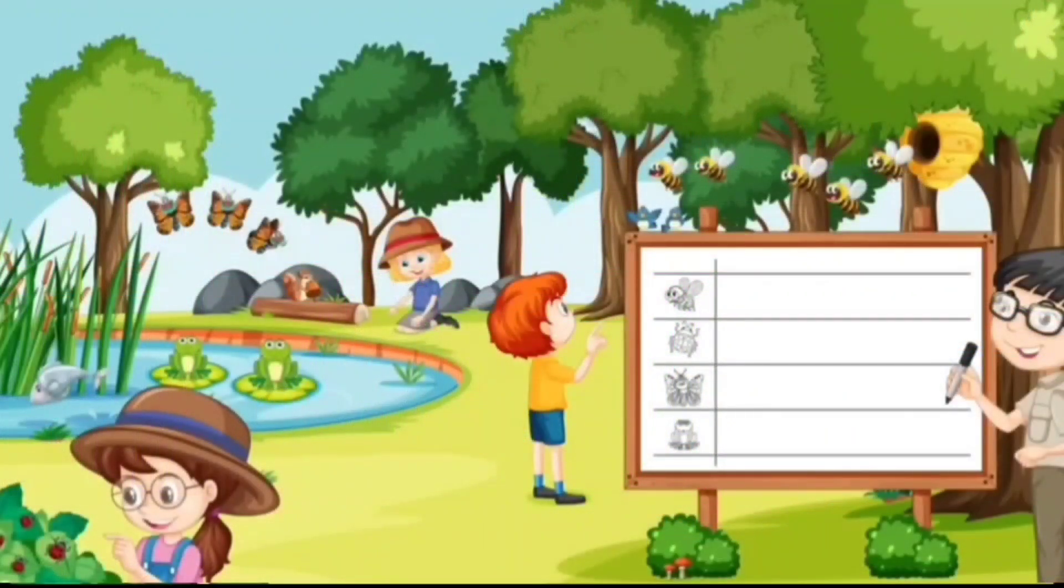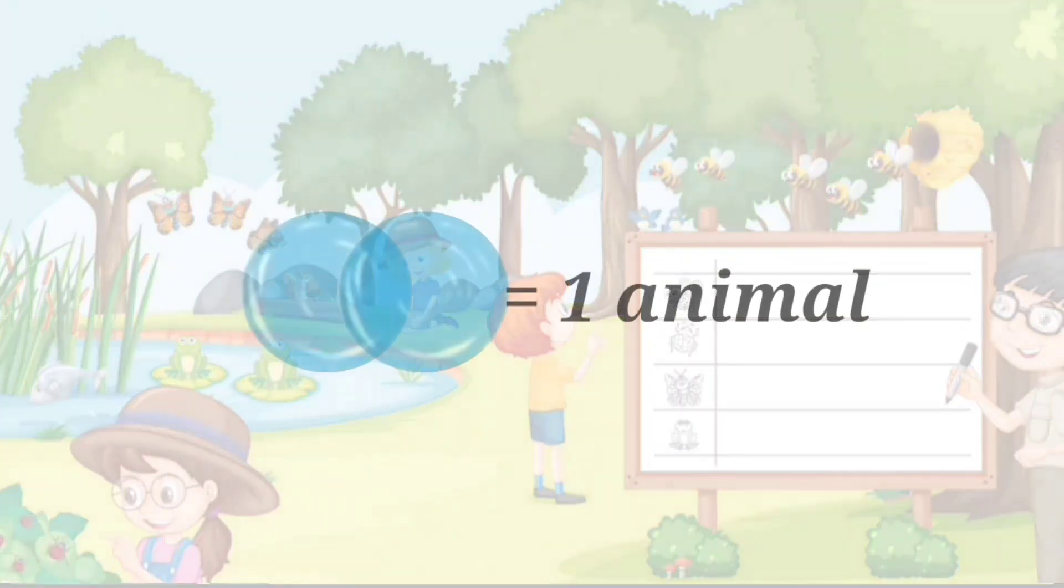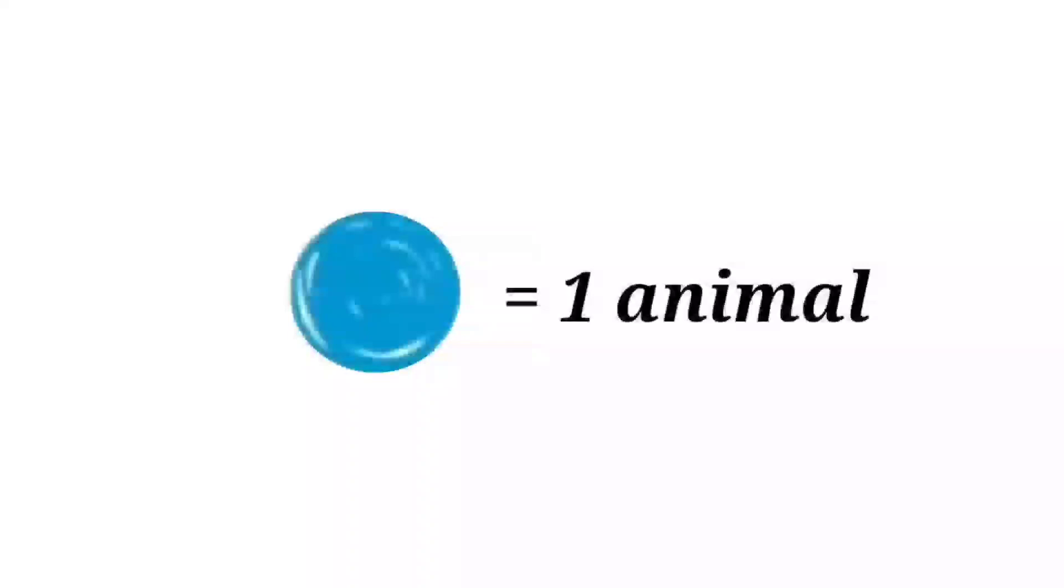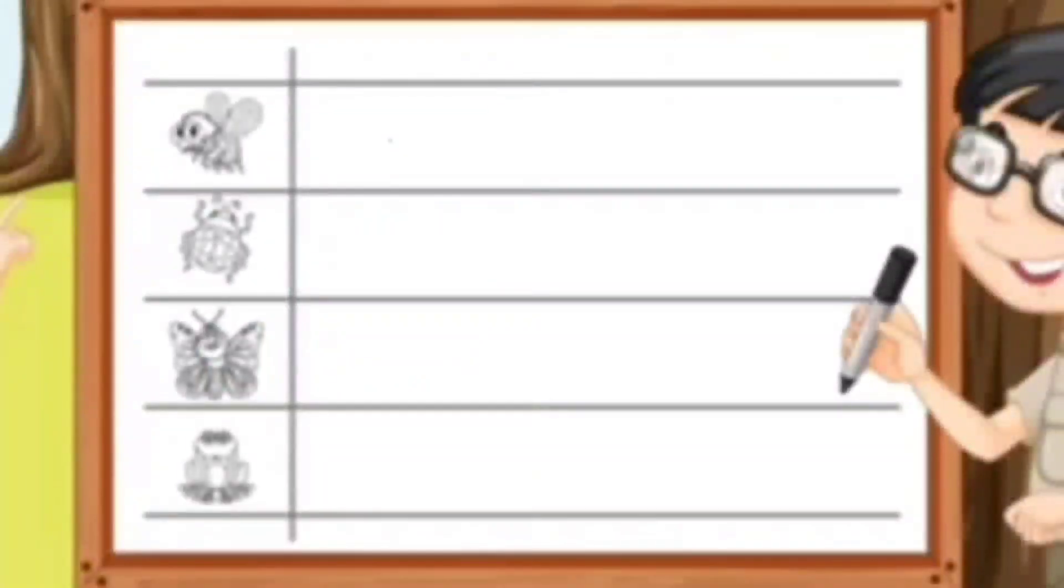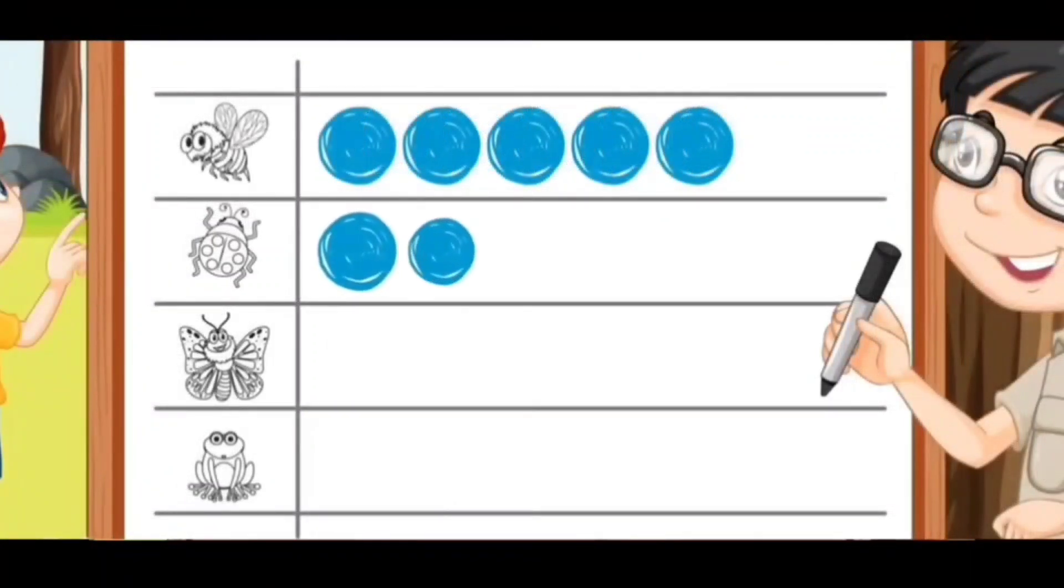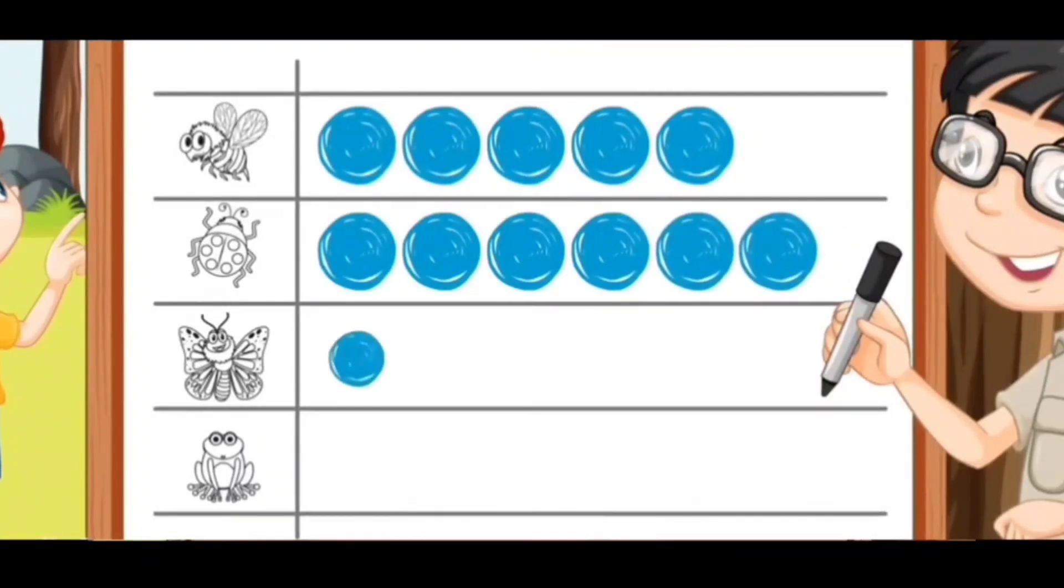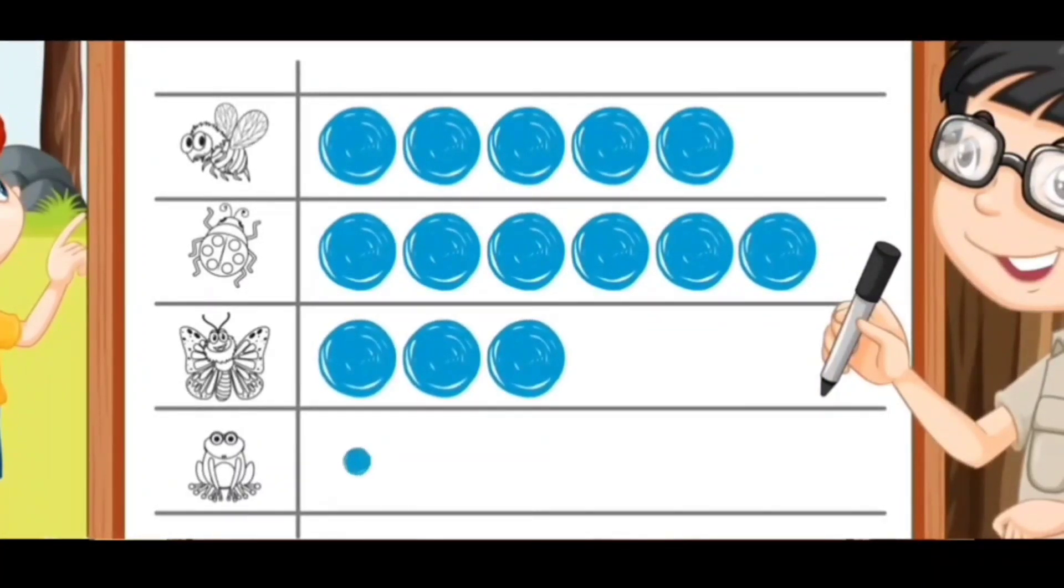Their number can be represented on a pictograph using a symbol. We will draw 1 circle to show 1 animal. To show the number of bees, we will draw 5 circles. For ladybugs, we will draw 6 circles. For butterflies, we will draw 3 circles. And for frogs, we will draw 2 circles.